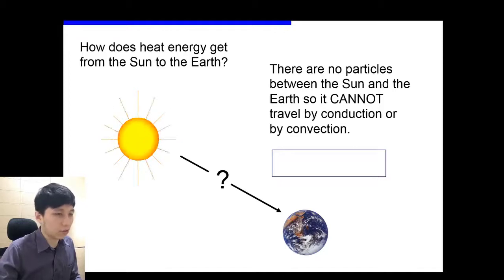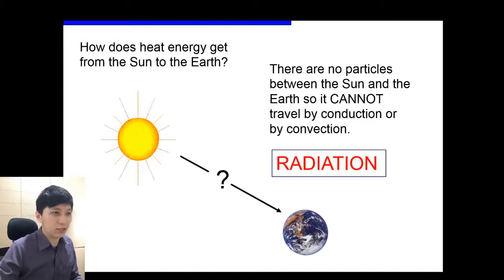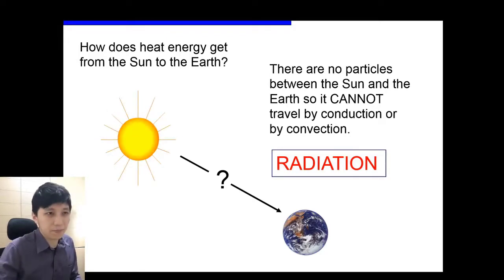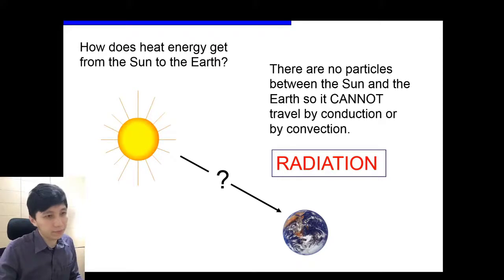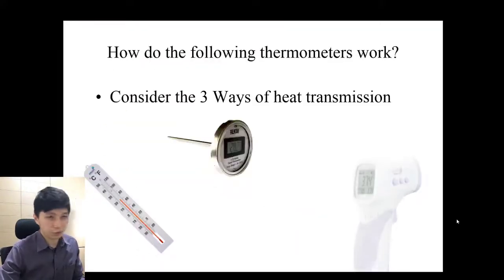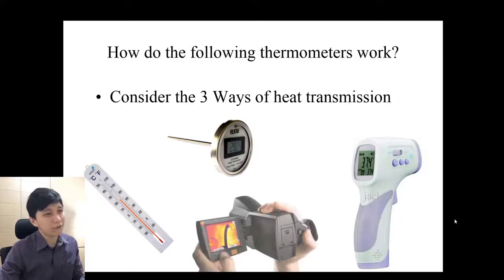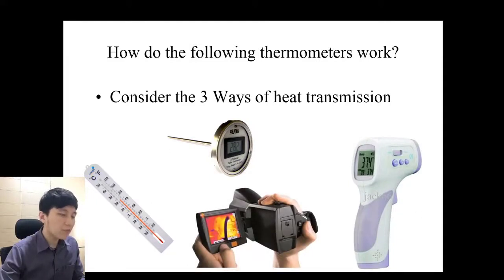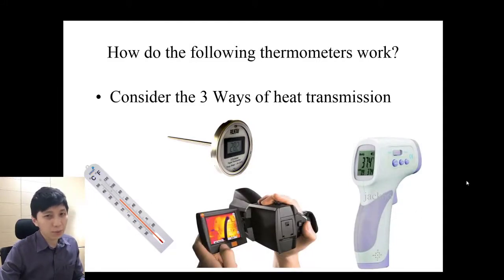Lastly, the third heat transfer method is called radiation. The special thing about radiation is it does not require any particles, so it can travel through a vacuum. For these four thermometers shown, think about what heat transfer method each one is relying on.